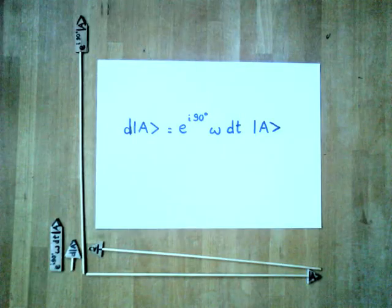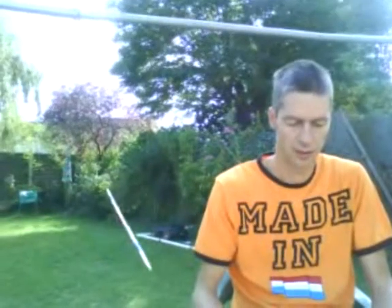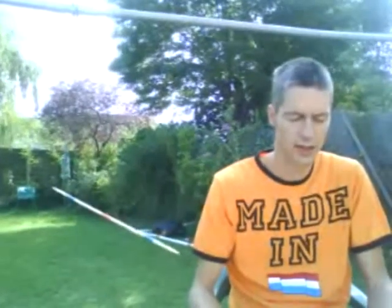We could also readily derive a generalized form of the Schrödinger equation, which simply states that the result of an arrow subtraction between two subsequent states of the arrow is always perpendicular to the arrow itself and proportional to the infinitesimal change in angle. We saw that this evolution equation is valid for any spinning arrow-like object.